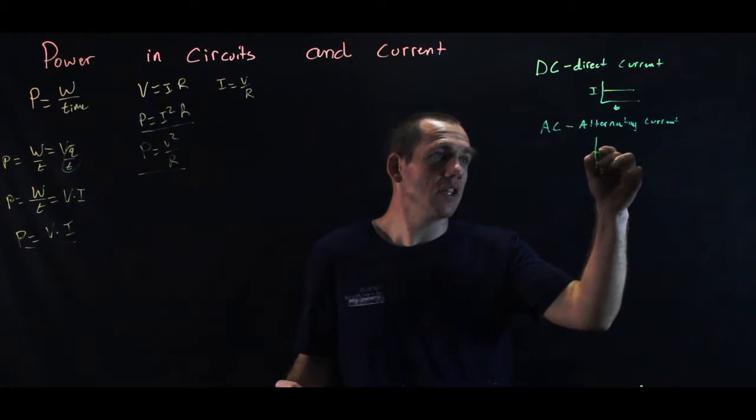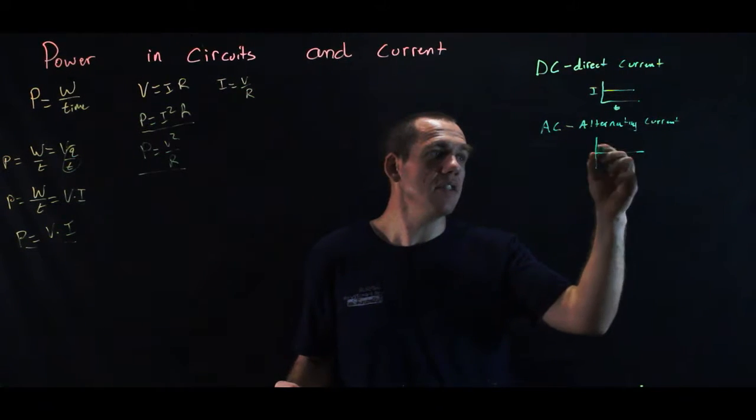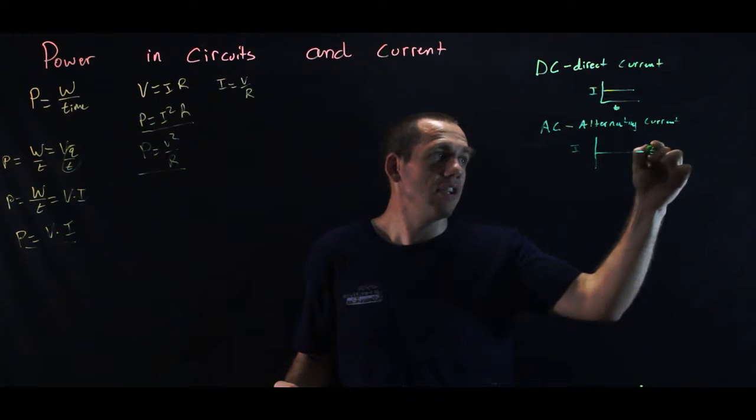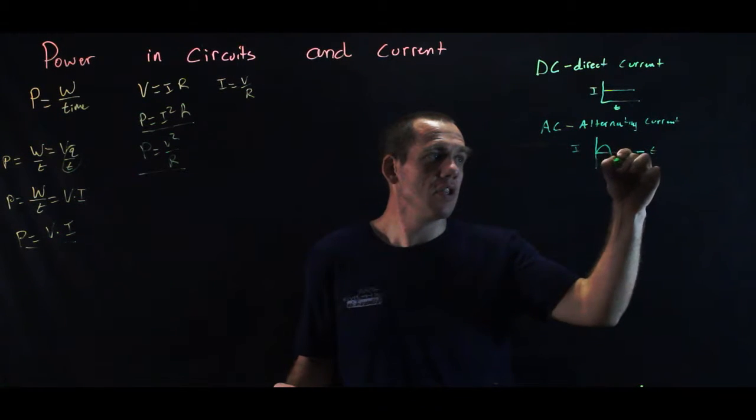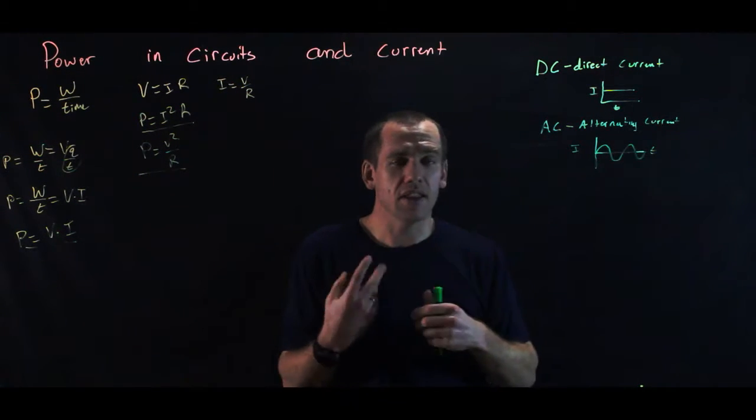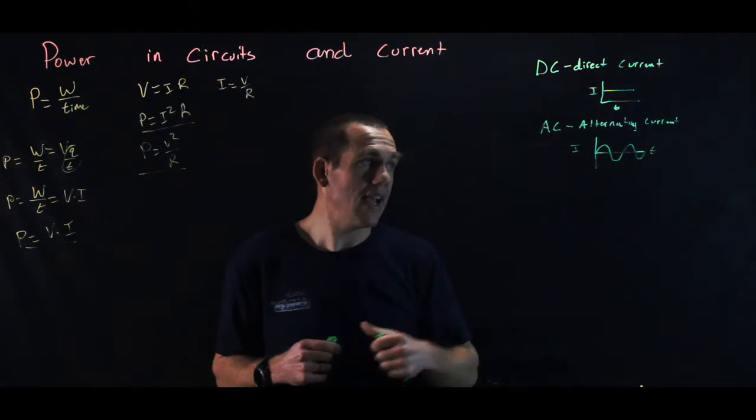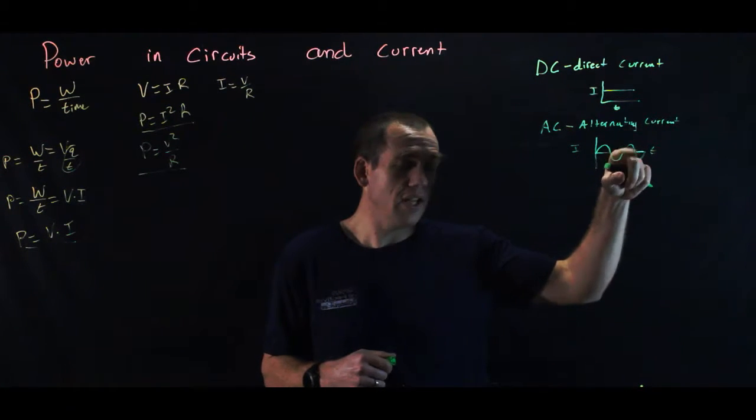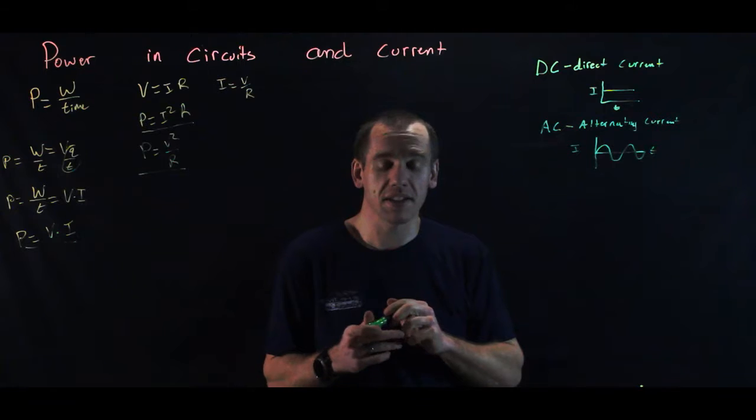And it does that in a sine wave. So if we were to look at the current versus time graph on this thing, it actually does look sinusoidal. So you get the sine wave. And in the United States, that frequency, it alternates back and forth at 60 Hz, 60 times per second.